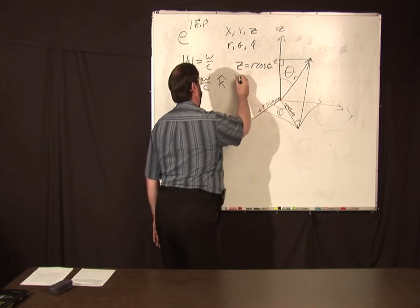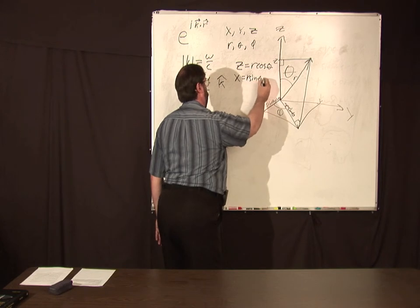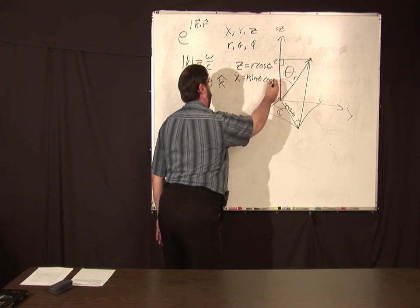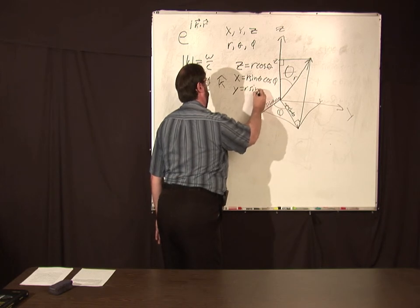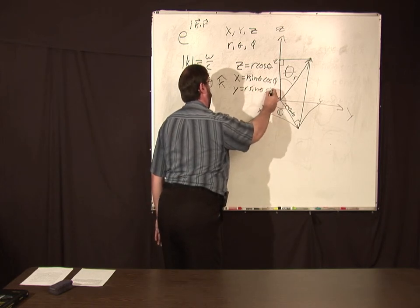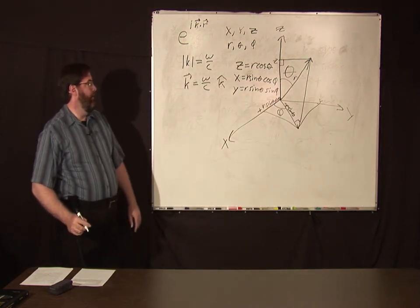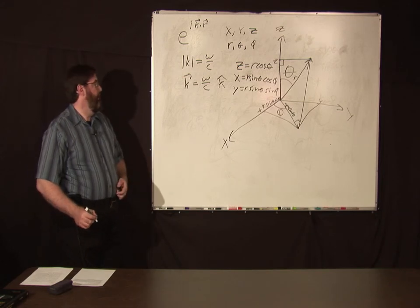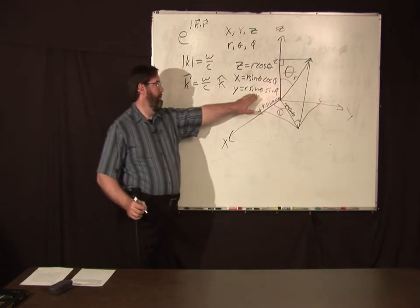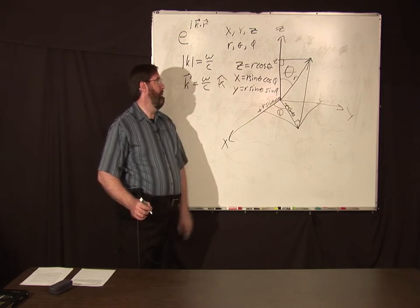So we've got x equals r sine theta cosine phi, and y is r sine theta sine phi. So those are just two ways of describing a vector. This is the relationship between the spherical coordinates and the Cartesian coordinates.